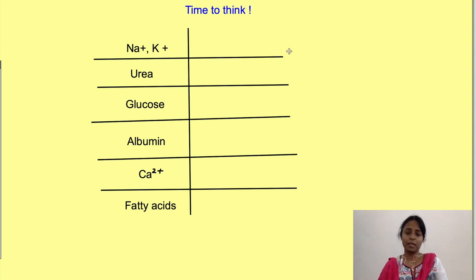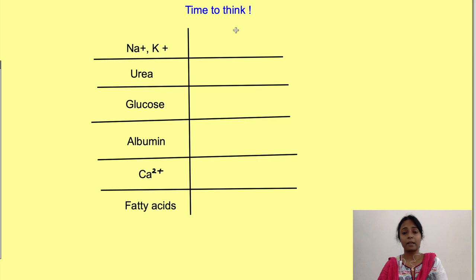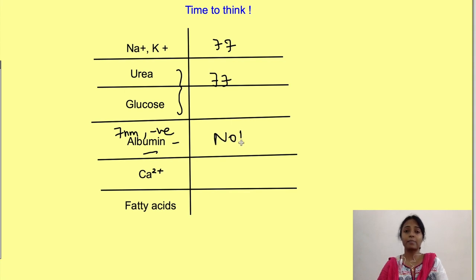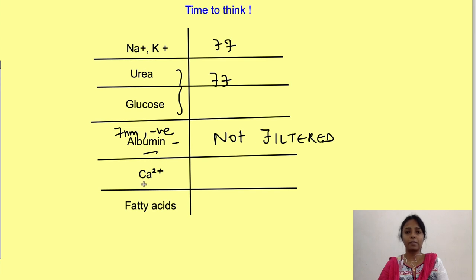Now let's apply this to a list of substances. Electrolytes like sodium and potassium are very small and freely filtered. Urea and glucose are also freely filtered — small and uncharged. Albumin, however, is around 7 nanometers in size and is negatively charged; since any anionic substance greater than 6 nanometers is not filtered, albumin — a plasma protein — is not filtered.